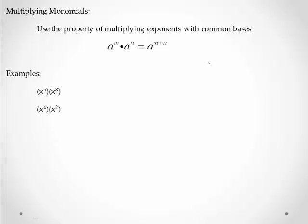So for example, x to the 5th times x to the 8th, or x to the 4th times x squared. The reason this works is because x to the 5th is five x's, and then x to the 8th is eight x's. And we're multiplying them all together in a long string, so you have 13 x's. So that's x to the 13th.